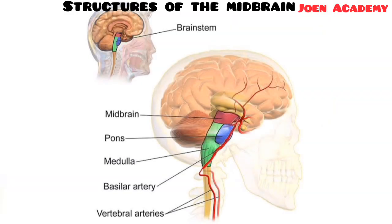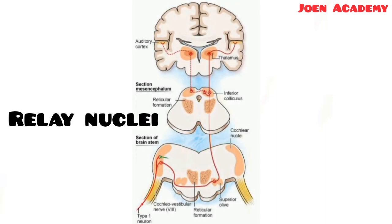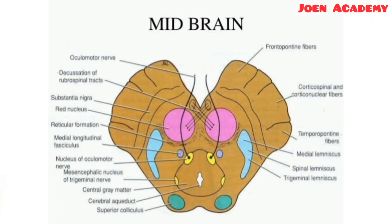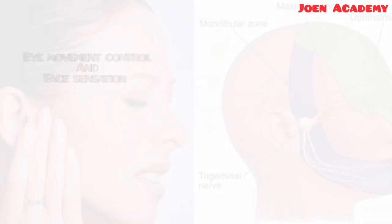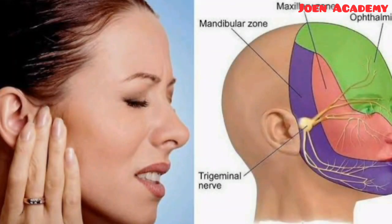Some of the important structures contained in the midbrain are the relay nuclei. The relay nuclei are involved in the processing of auditory as well as visual information. Nuclei of the following cranial nerves are also contained in the midbrain: the oculomotor nerve (cranial nerve 3), the trochlear nerve (cranial nerve 4), and also the nuclei of the trigeminal nerve, through which it controls eye movement and also the sensation of the face. Don't forget that the trigeminal nerve is the fifth cranial nerve.